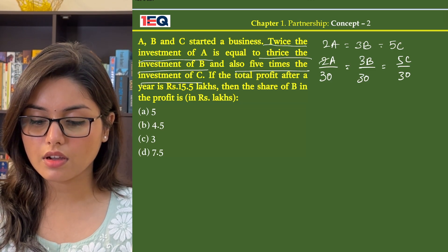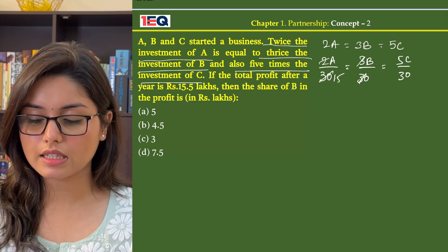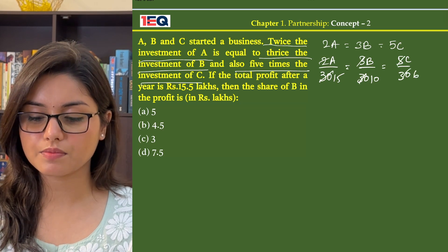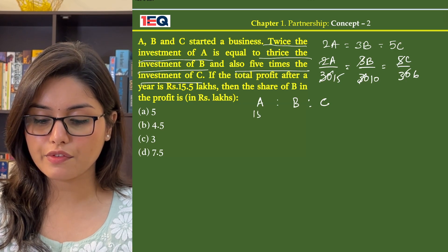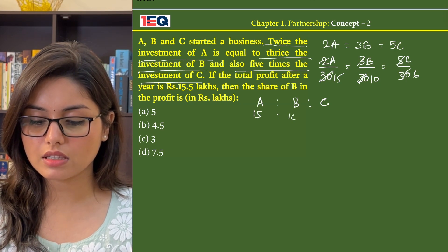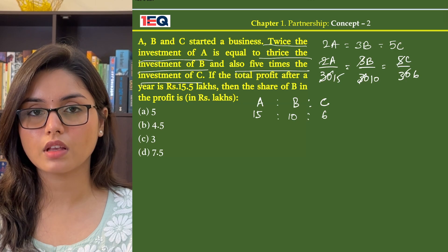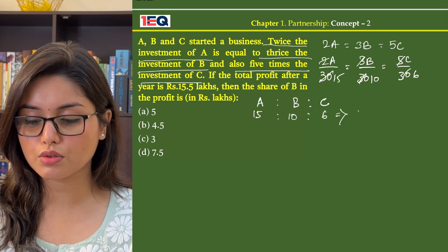From here we get 15, 10, and 6. So the ratio of A is to B is to C is 15 is to 10 is to 6. And their total is equal to 31.